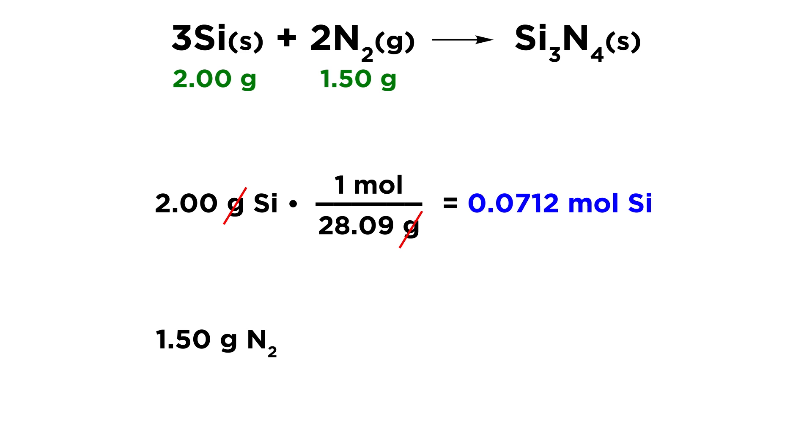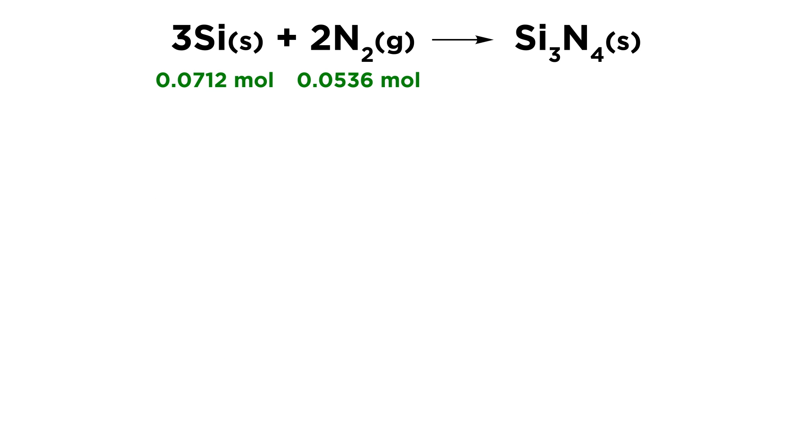Let's do the same for nitrogen. We're going to take 1.50 grams of nitrogen, and we're going to multiply by 1 mole over 28.01 grams of nitrogen, because we have 2 nitrogen atoms, each of which weigh about 14 atomic mass units. So times 2, we get 28.01 to be specific, and that is the molar mass of N₂, and that way grams cancel, and we end up with 0.0536 moles of N₂. So this is going to get us in a much better position to know what is going on. So let's replace our masses with our values in moles.